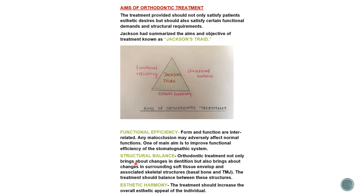The second element is structural balance. Orthodontic treatment brings about changes not only in the dentition but also in the surrounding soft tissue envelope and associated structures of the bones and the TMJ. The treatment should balance between all structures. When getting ortho treatment done, there is an impact on the jaws and musculature too, so we must emphasize the dentition, basal bone, and TMJ. TMJ may not show symptoms early but pain will appear in the long run. This is Jackson's triad — an important exam question.